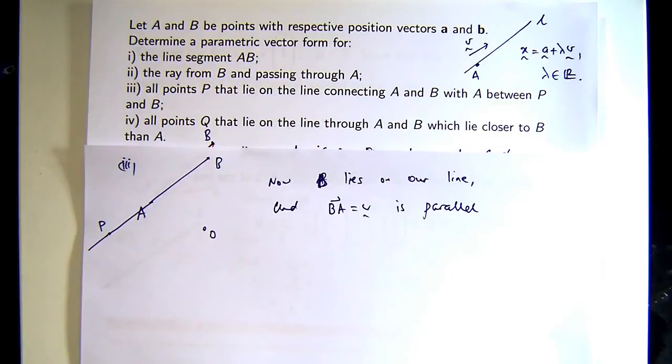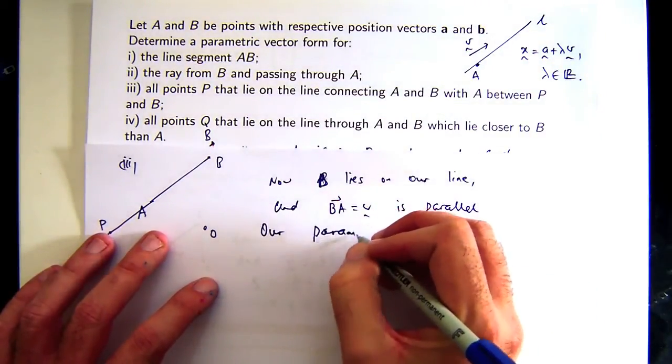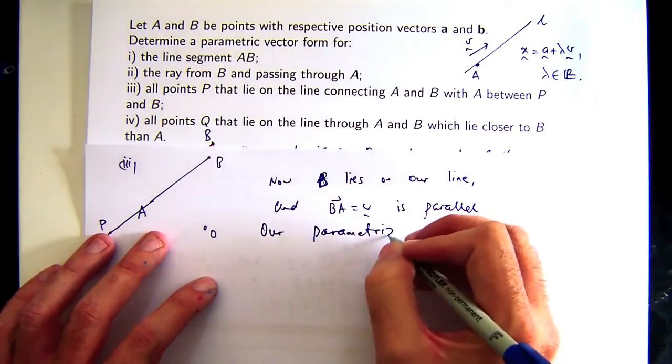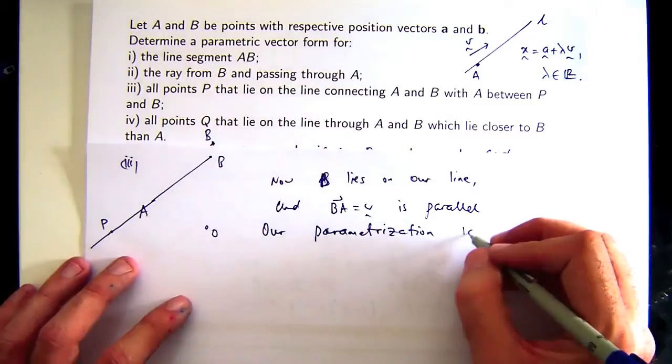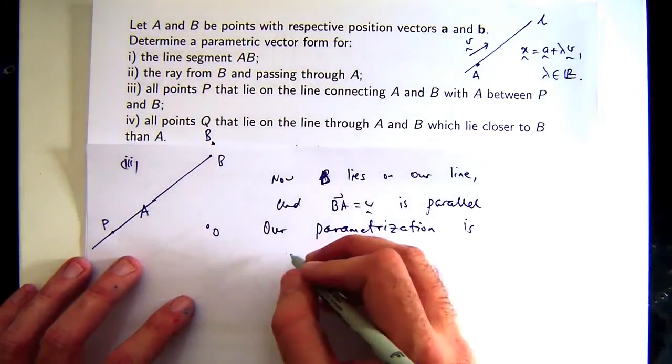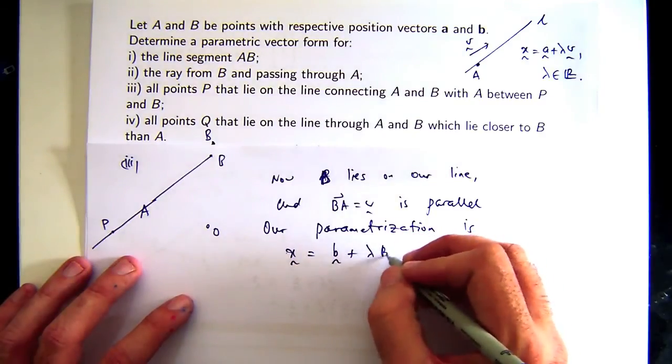Very good. Because you don't want to use that first part of the vector BA, do you? So let's use this plus lambda BA.